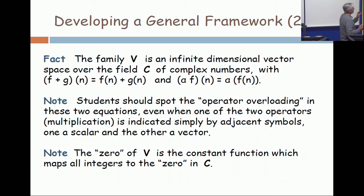So the concatenation on the right-hand side is, again, indicating a product, but it's the product of two complex numbers. f of n is a complex number, alpha is a complex number—you multiply them together. So multiplication is defined on the right, addition is on the left, and it satisfies all the familiar properties for a vector space that you studied when you took calculus.